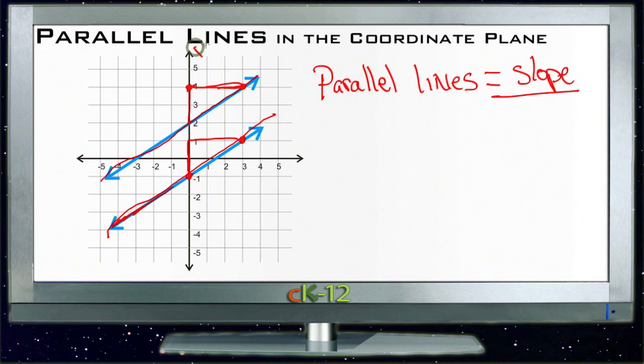For instance, if I wanted to find a third line that was parallel to these two, I just need to come down the y-axis to some other point, say down here at negative five, and then use the same slope, rise to run three, to get my next two points and then connect those with a straight line. And we'd have another line that was parallel to the other two we already had, like so.